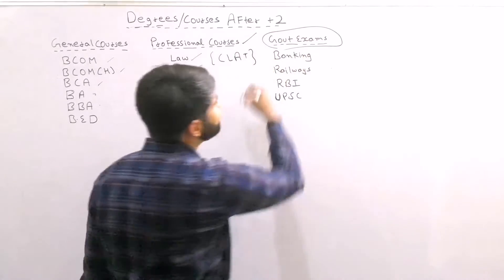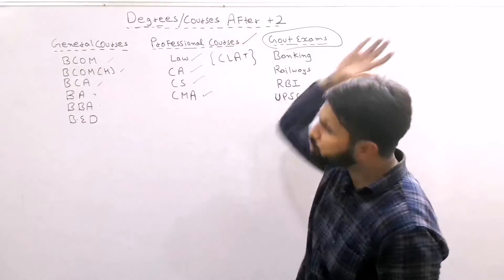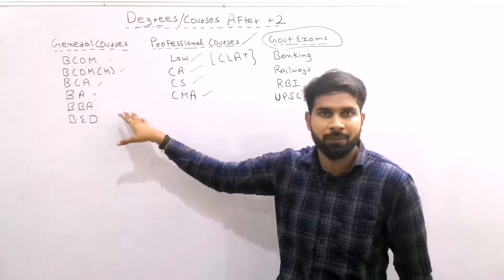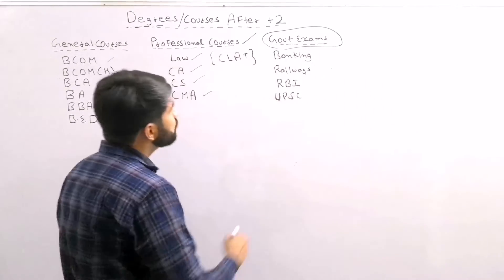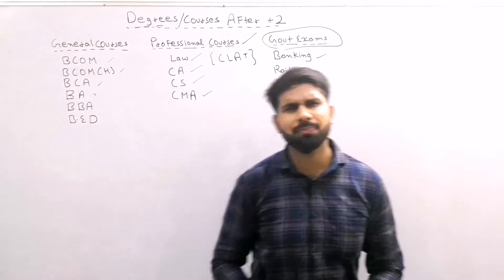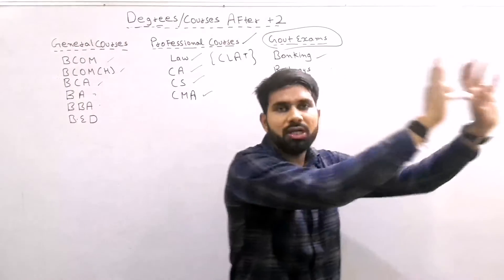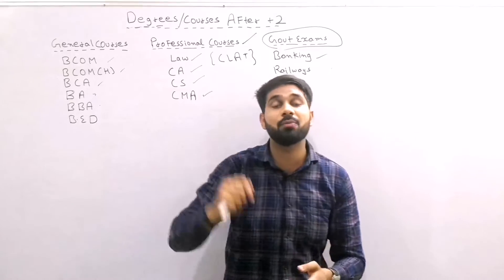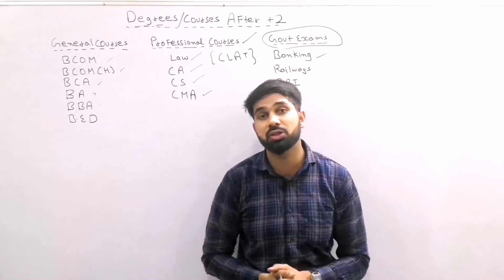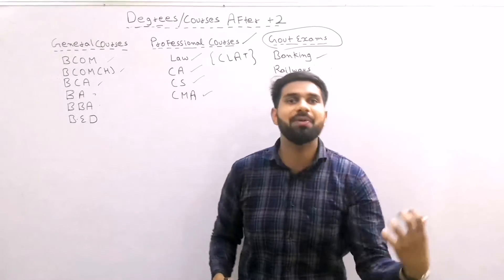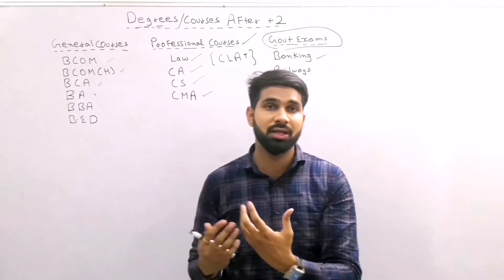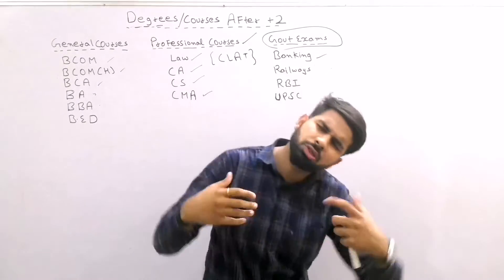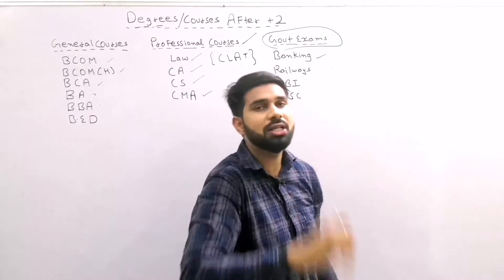Moving on to Government jobs — I will tell you that for a good level government job, at least graduation is required. The first government job category is banking. Not private banks — I mean SBI, Bank of Baroda — these are government banks. It is not just interview and pass; there is an officer-level exam with a proper written exam, personal interviews, and GD rounds. I will also make a video on private bank jobs vs. government bank jobs — which job is best — stay tuned.